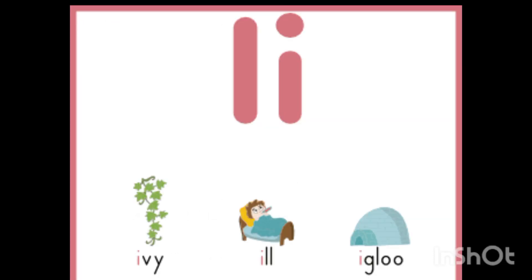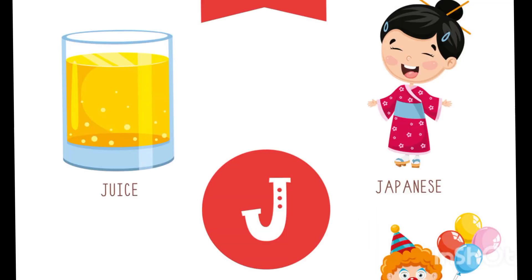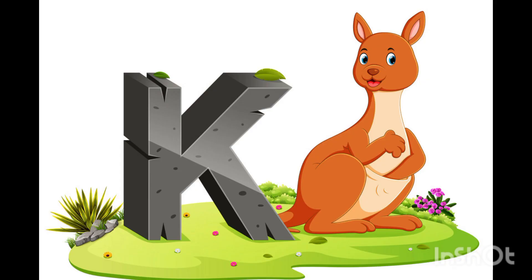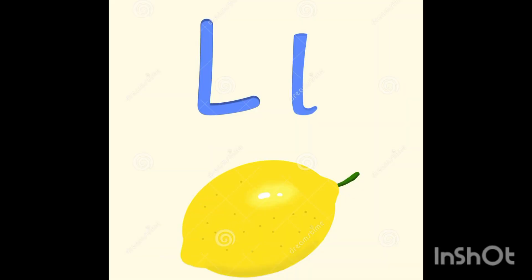I-I, ice cream. J-a, juice. K-a, kangaroo. L-a, lemon.